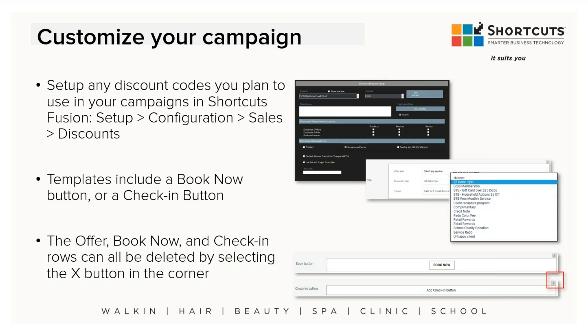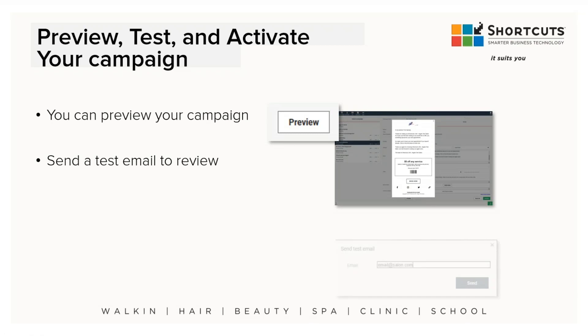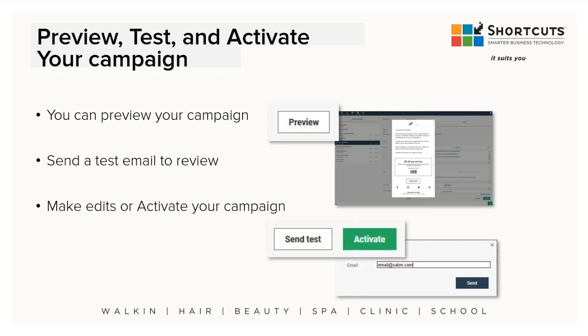If you're just sending a general information email, you don't have to use the Book Now or Check-In buttons at the bottom of the templates. You can eliminate any row by pressing the little X on the right side of that row. So if you're not sending a coupon, you can eliminate that row. And you can eliminate the Check-In or Book Now rows as well. Once you're done, press Preview — marketing will give you a pop-up window showing what the email looks like. You can also send a test email to yourself. Once you're happy, press Activate.